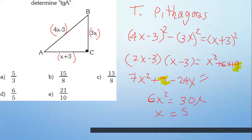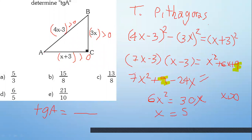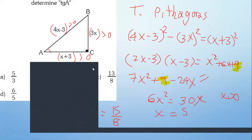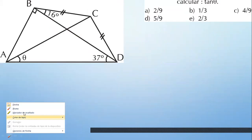¿Por qué no puede ser 0? Porque si fuese 0, no tendrías lado. Debes poner 3x mayor a 0, x más 3 mayor a 0, y esto mayor a 0 para que exista. Sabiendo que x es mayor a 0, x sale 5. Pero ¿qué te están pidiendo? Tangente de A: opuesto sobre adyacente. Opuesto a A sería 3x. Adyacente es x más 3. 3 por 5 es 15, 5 más 3 es 8. La respuesta es 15 sobre 8.